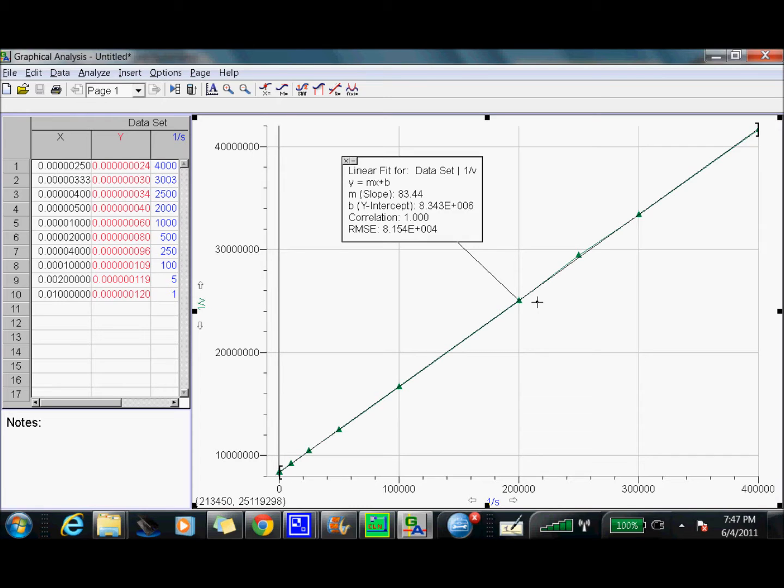So the KM and the V max, V max is going to be our Y intercept. But remember, when we do this, it's going to be one, this Y intercept is one over V max. So to get V max, you have to divide one by this number. And we'll go ahead and do that in a second. Also, this is our slope. That's going to be important as well for a first rate order constant.